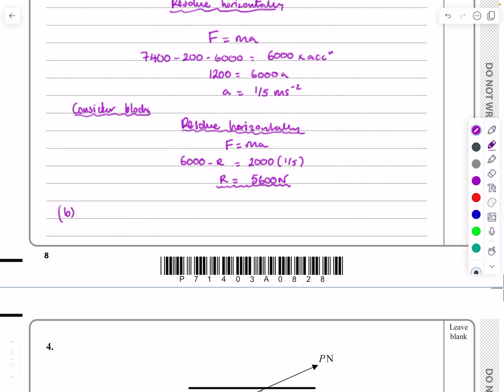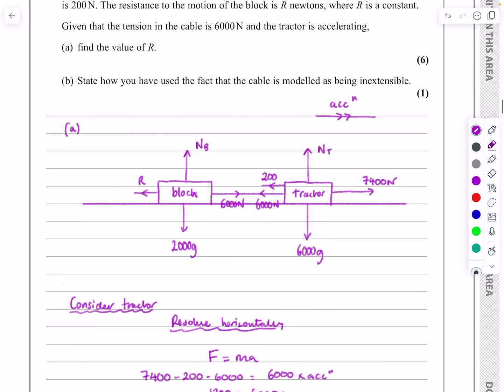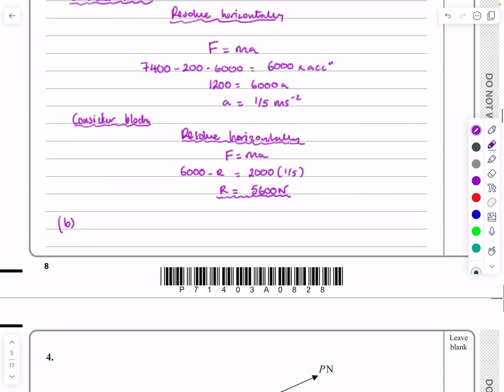So that's part A done. Part B then, and part B is very quick, isn't it? Part B just says, state how you've used the fact that the cable is modeled as being inextensible. So if it's inextensible, then the acceleration is the same throughout the system. I'm going to write down, if string is inextensible, then, and I'm going to say, acceleration is constant for the truck and the block.